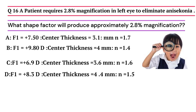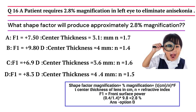Question 16: A patient requires 2.8% magnification in the left eye to eliminate aniseikonia. What shape factor will produce approximately 2.8% magnification? The options are given. Shape factor magnification has to be calculated based on the formula. The correct answer is Option B.